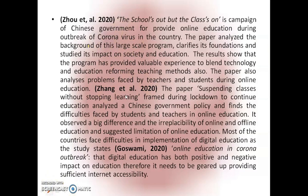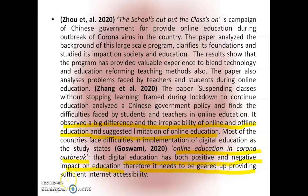The next format is running text. Writing the review of literature in running text requires merging all studies into a single paragraph. For example, as you can see in your interface, one paper shows analysis of problems faced by teachers and students during online education; another paper 'Suspending Classes Without Stopping Learning' by Zhang et al.; and a study by Gosami 2020 on online education during the corona outbreak suggests digital education has both positive and negative impacts and needs sufficient internet accessibility. There must be coherence and connectivity between studies when writing in running text.